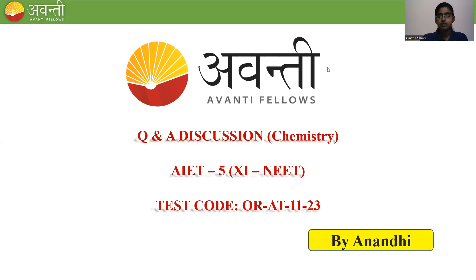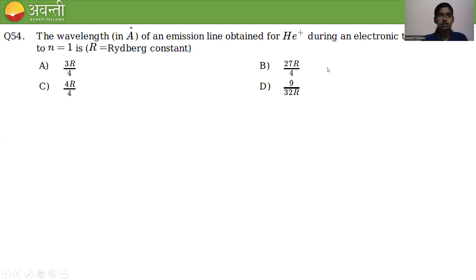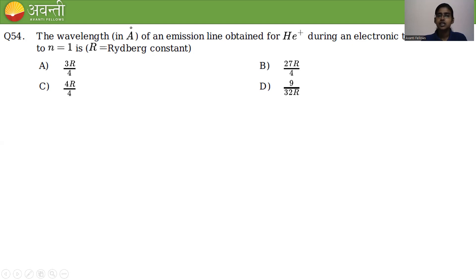The first question for today's session: the wavelength of an emission line obtained for helium-plus during an electronic transition n=3 to n=1. We have to find out the wavelength, that is lambda, for helium-plus.